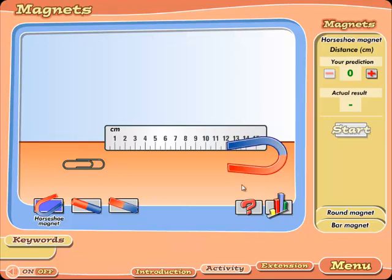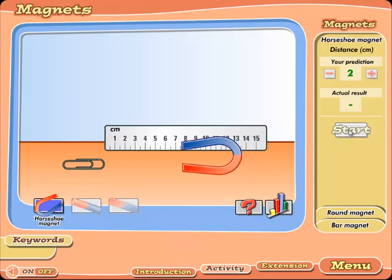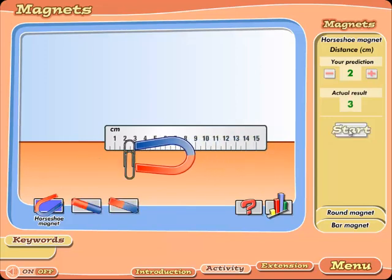Now let's write our prediction. What about the horseshoe magnet? It will attract the paper clips from how many centimeters? Let's say maybe two. This is my prediction. Let's check. Oh, the actual result is three, not two.